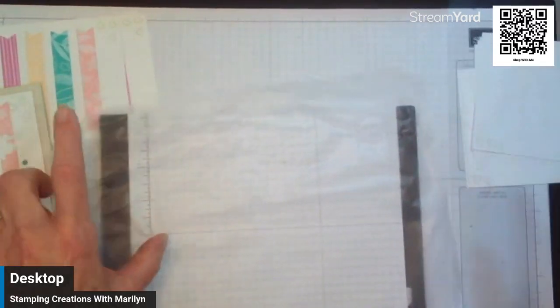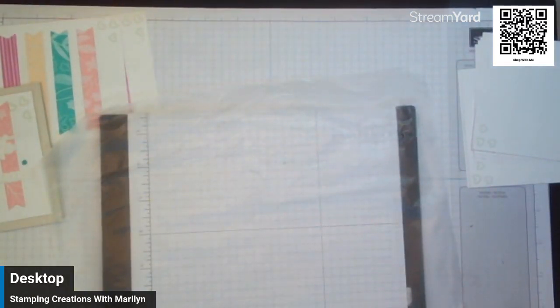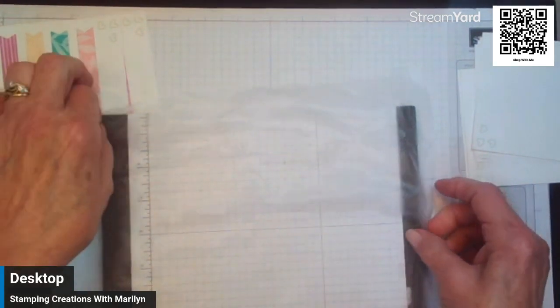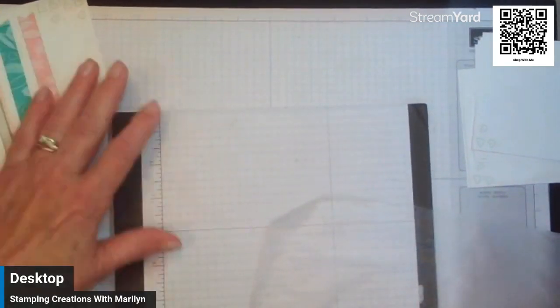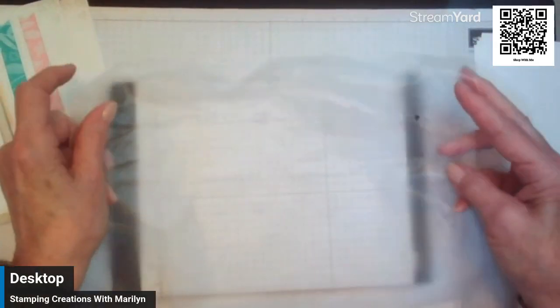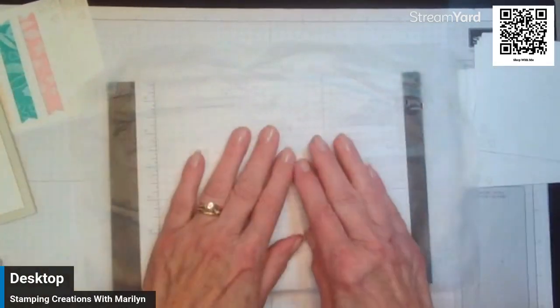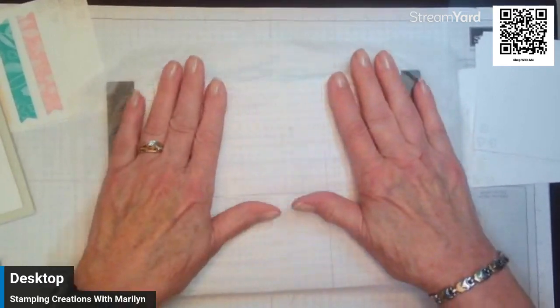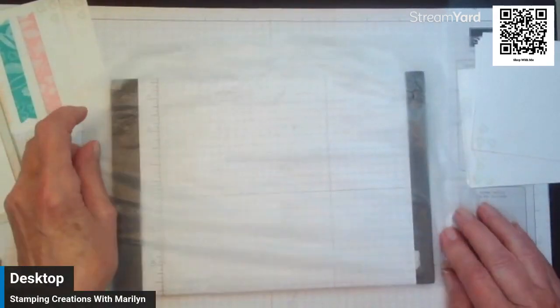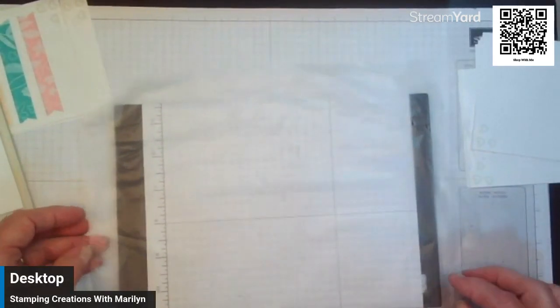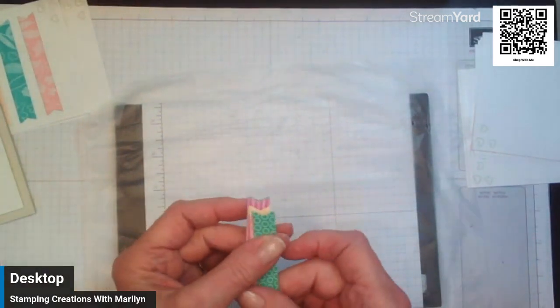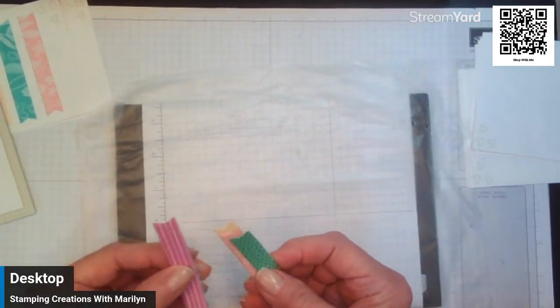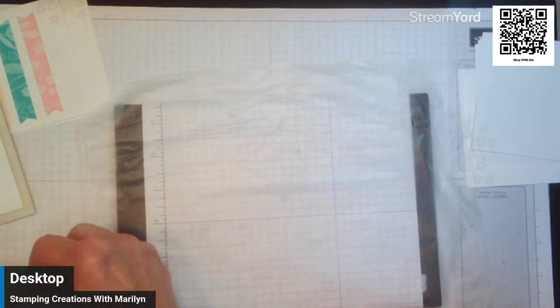So I have my die cuts, I have my grid paper, I have my Press'n Seal which is sticky enough for the paper and sticks my hand a little bit too. I just laid it on there. I took my colors and decided which way I wanted them to go because all my cards are going to be a little bit different.